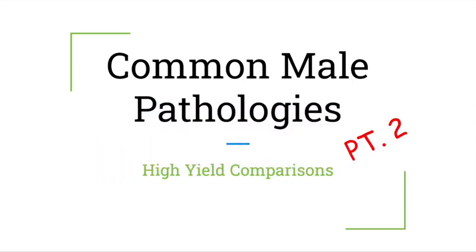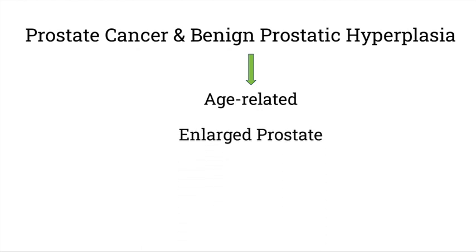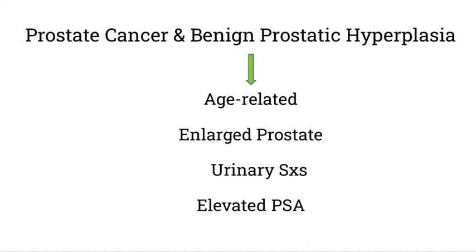These two conditions have overlapping features. They are both age-related, occurring in many men who are elderly or over the age of 50. They both include clinical features such as an enlarged prostate and urinary symptoms such as urinary urgency, straining, and dribbling.